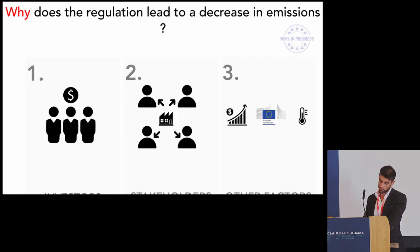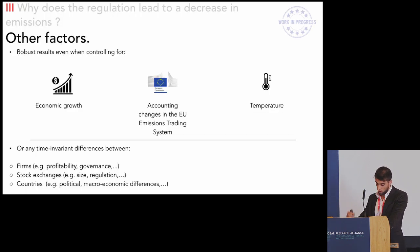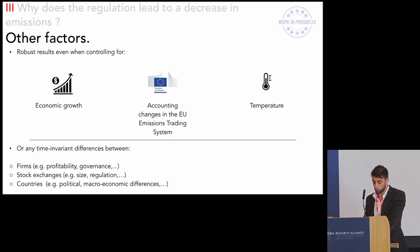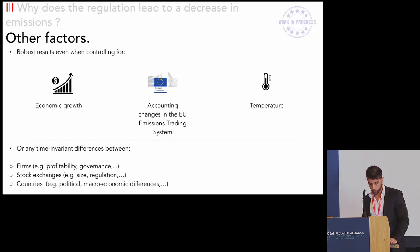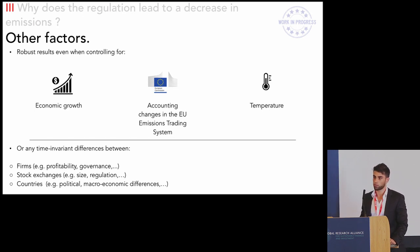We also consider alternative explanations. We control for economic growth, for changes in the EU ETS (the emissions trading system), and even for temperature. We also test alternative specifications including different fixed effects. Each time, we find a significant reduction in emissions for UK firms.